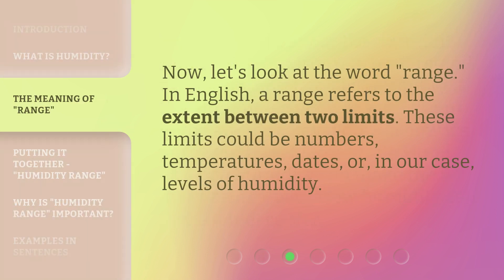Now, let's look at the word range. In English, a range refers to the extent between two limits. These limits could be numbers, temperatures, dates, or, in our case, levels of humidity.